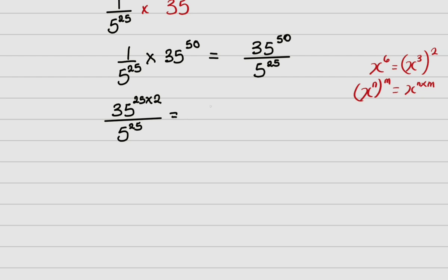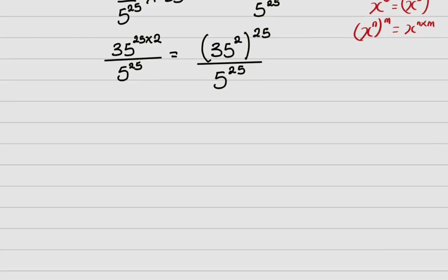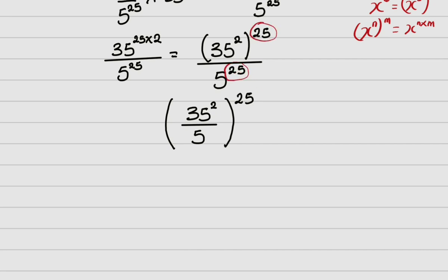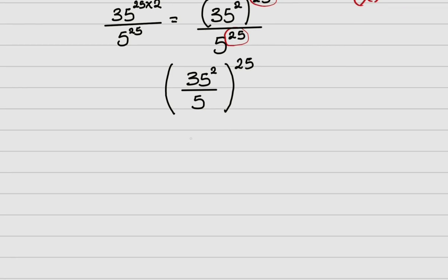This gives me (35 raised to power 2) raised to power 25, all over 5 raised to power 25. Since both the numerator and denominator share the same power of 25, I can combine them: this becomes (35 squared over 5), all raised to power 25.